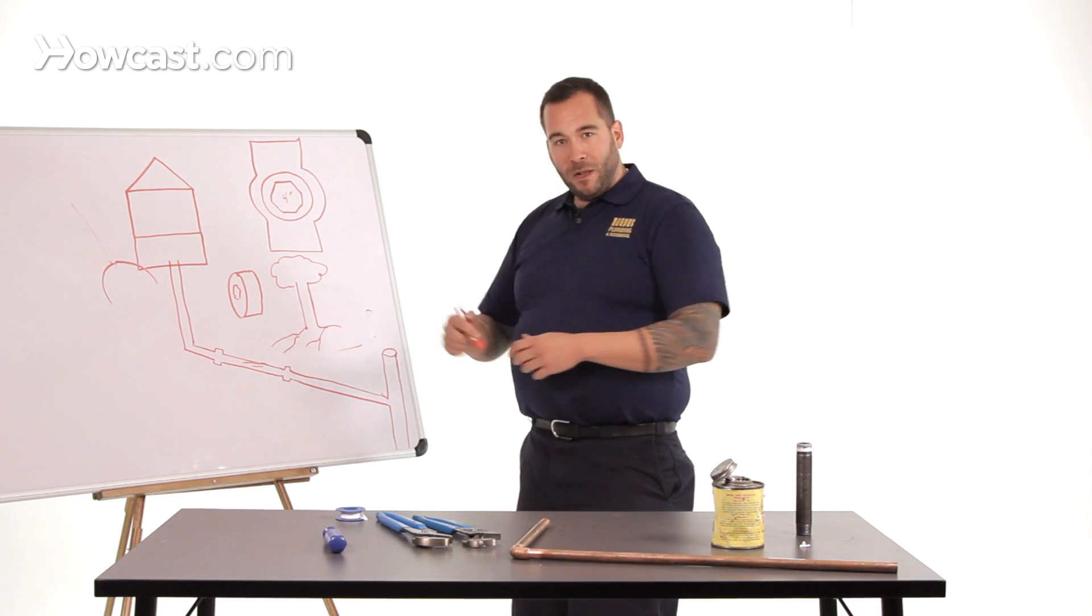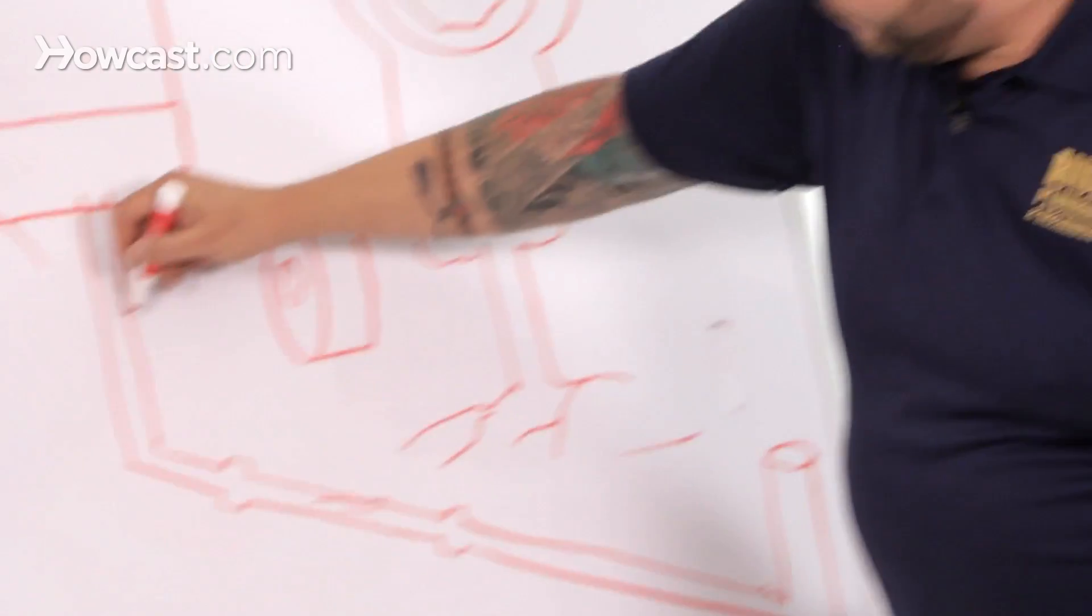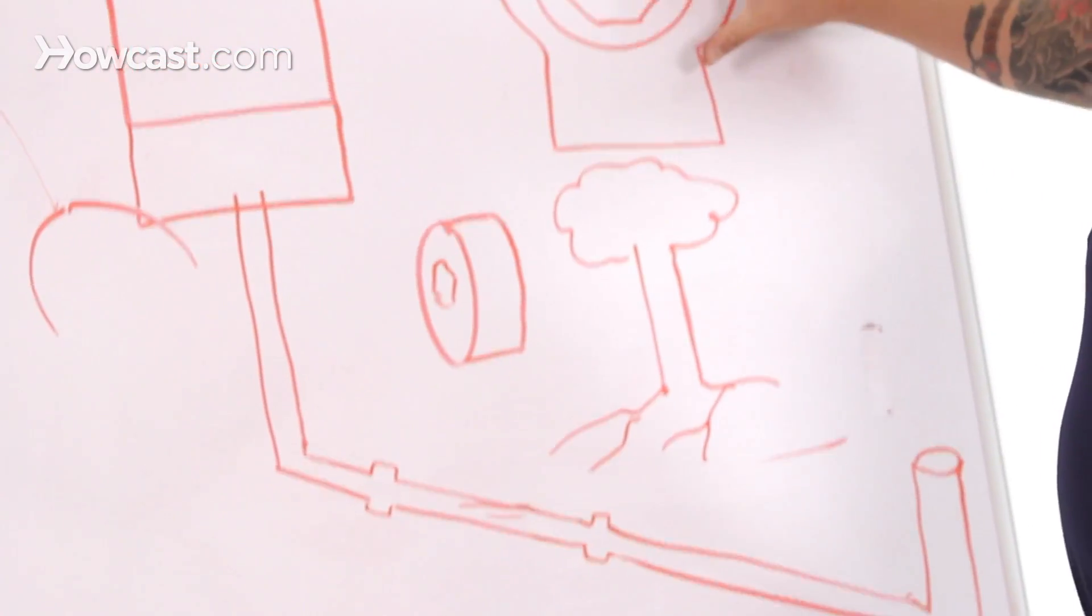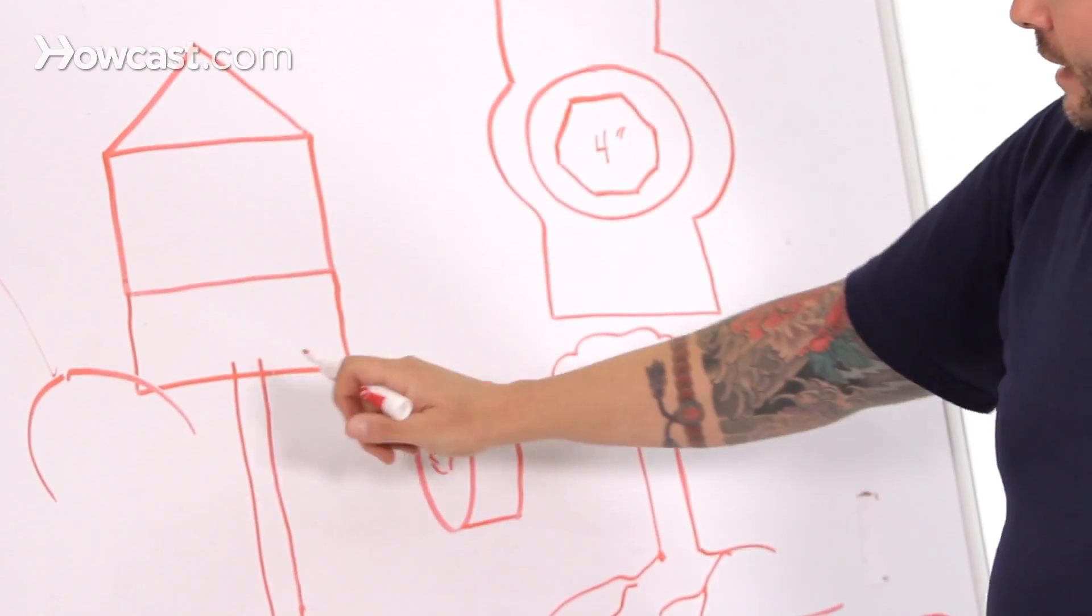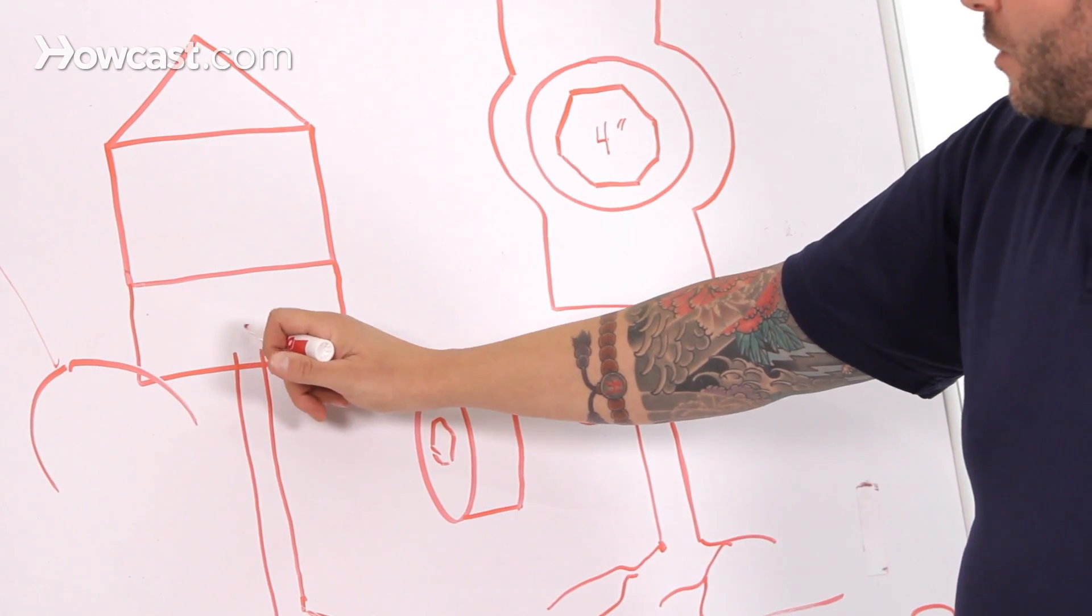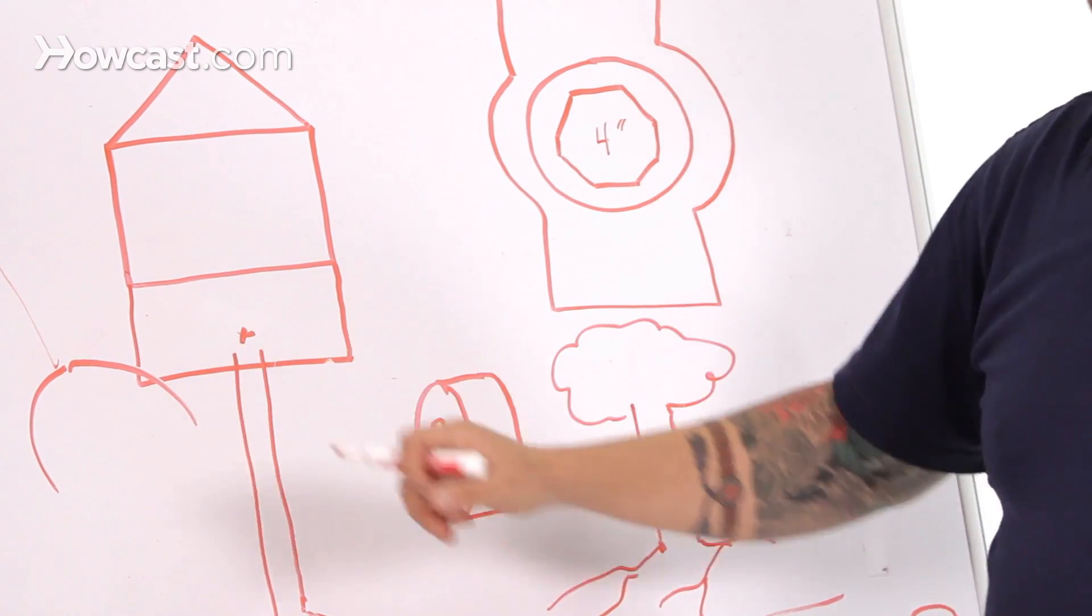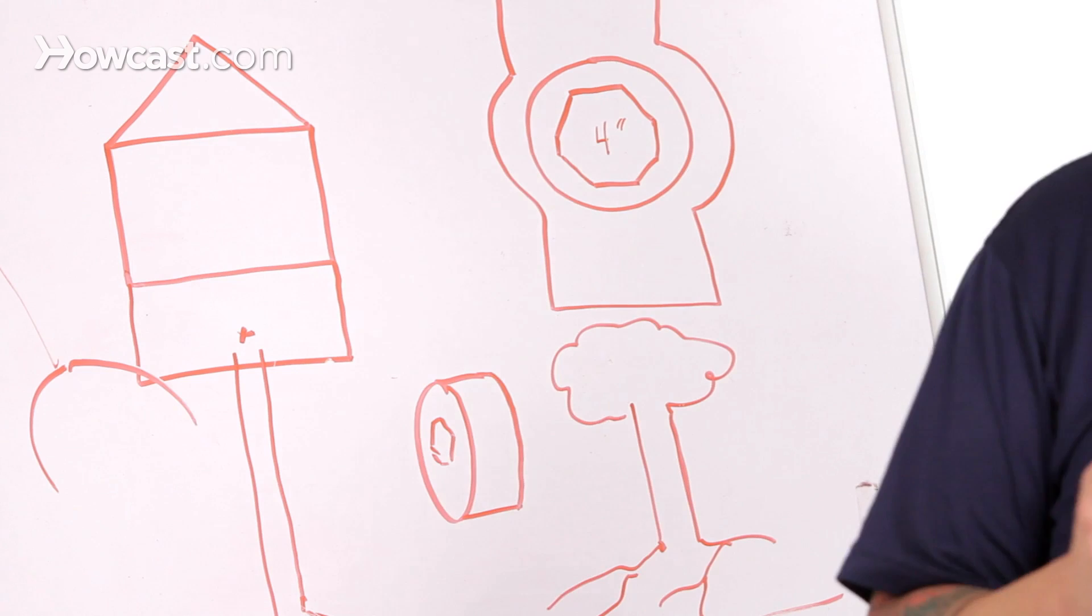So you'll get a big clump of roots. Normally speaking, this is a close up here of what the clean out would look like, a four inch clean out. Let's say somewhere in the basement, you have that four inch clean out right here.